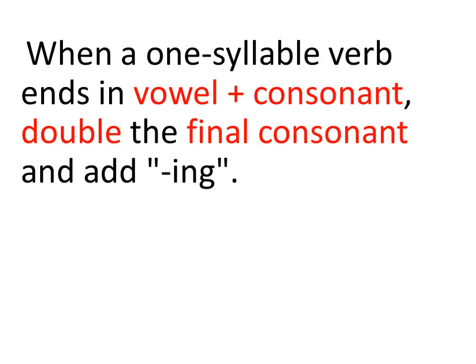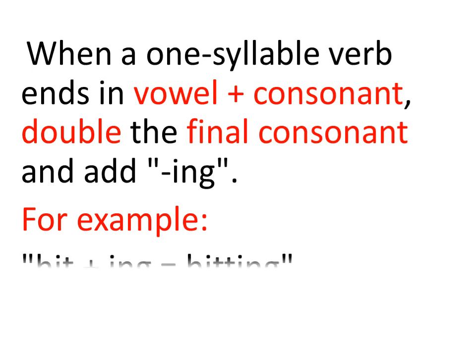When a one-syllable verb ends in a vowel plus consonant, double the final consonant and add -ing. For example, hit plus -ing becomes hitting. The vowel-plus-consonant pattern is 'i-t'; we double the final consonant 't': h-i-t-t-ing. Hitting.